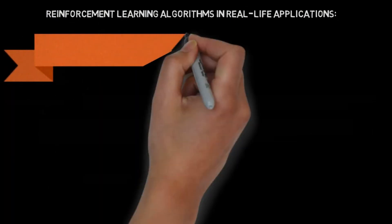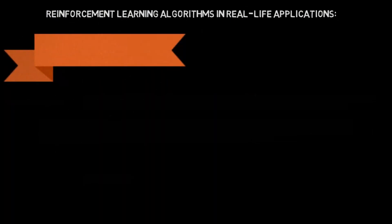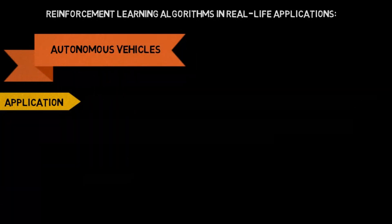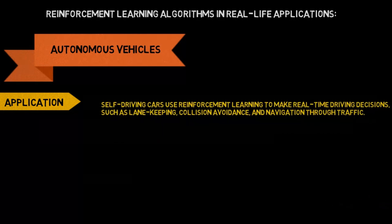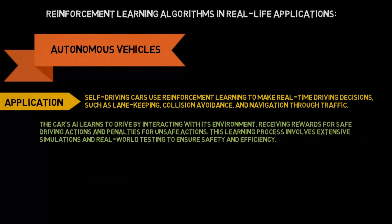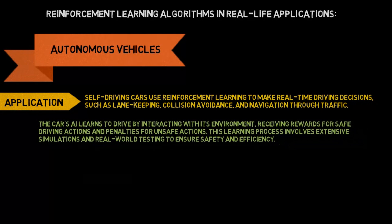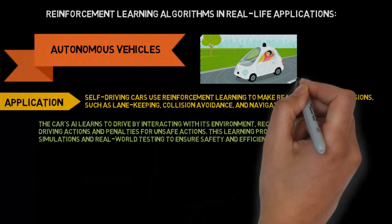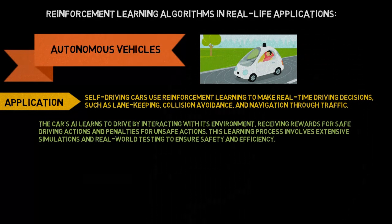Here are a few implementations of reinforcement learning algorithms in real-life applications. Self-driving cars use reinforcement learning to make real-time driving decisions, such as lane keeping, collision avoidance, and navigation through traffic. The car's AI learns to drive by interacting with its environment, receiving rewards for safe driving actions and penalties for unsafe actions. This learning process involves extensive simulations and real-world testing to ensure safety and efficiency.